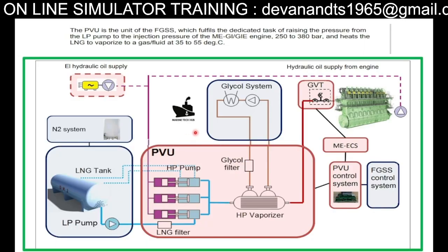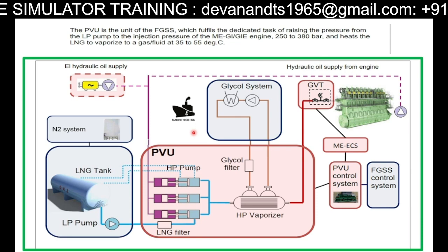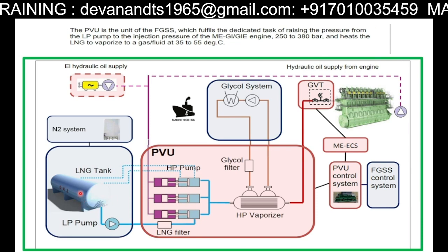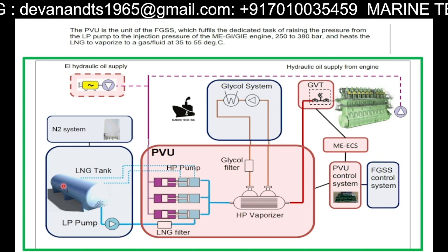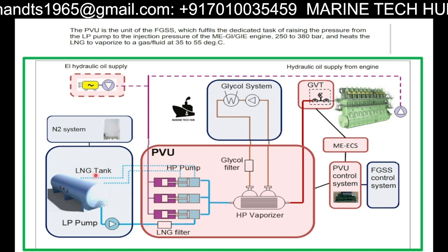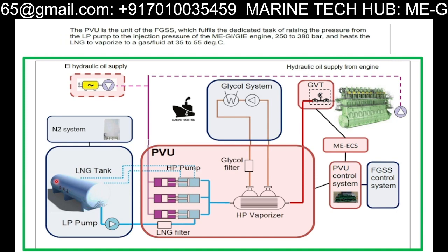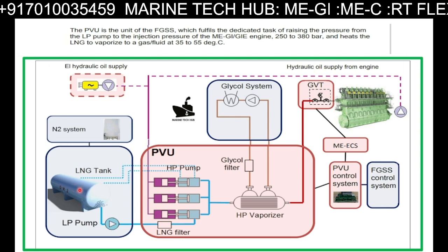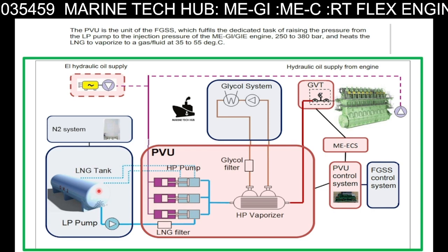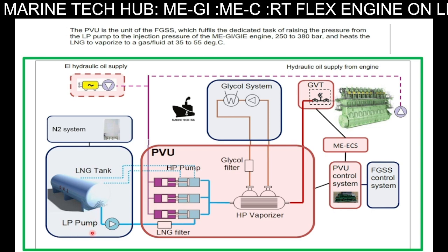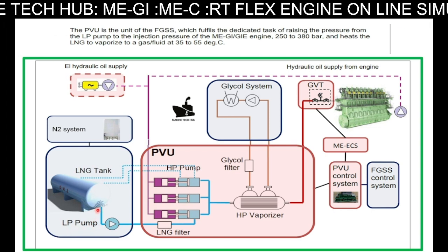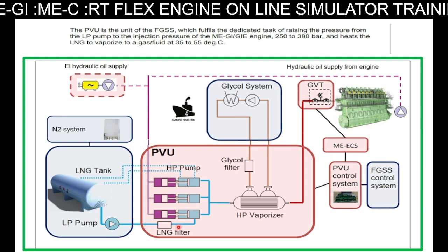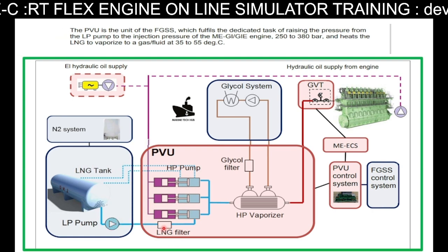Moving to the next slide — this covers the ME Engine system. You can see the LNG tank here. LNG is Liquified Natural Gas. The liquid is stored at a temperature of minus 162 degrees. From here, we have an LP pump — low pressure pump — and then it goes to the LNG filter.